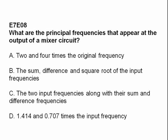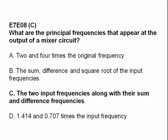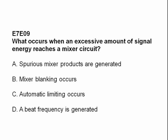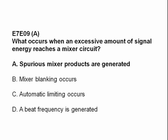What are the principal frequencies that appear at the output of a mixer circuit? A: two and four times the original frequency; B: the sum, difference, and square root of the input frequencies; C: the two input frequencies along with their sum and difference frequencies. The answer is C. When an excessive amount of signal energy reaches a mixer circuit, spurious mixer products are generated — that is answer A.